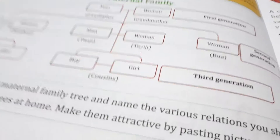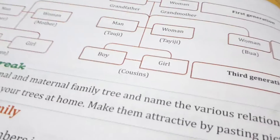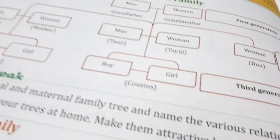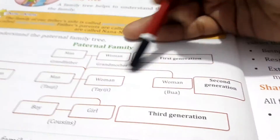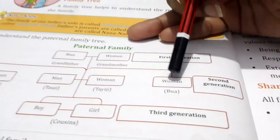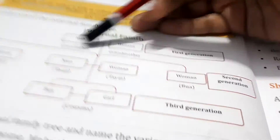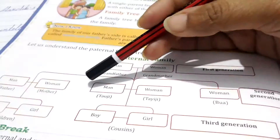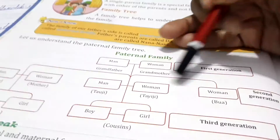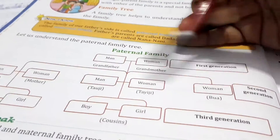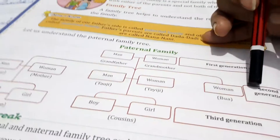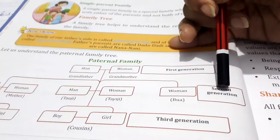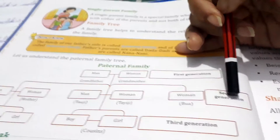Sometimes they have a son, sometimes a daughter. So, this is divided among us. Your father and his brothers and sisters are all in one generation — this is our second generation.